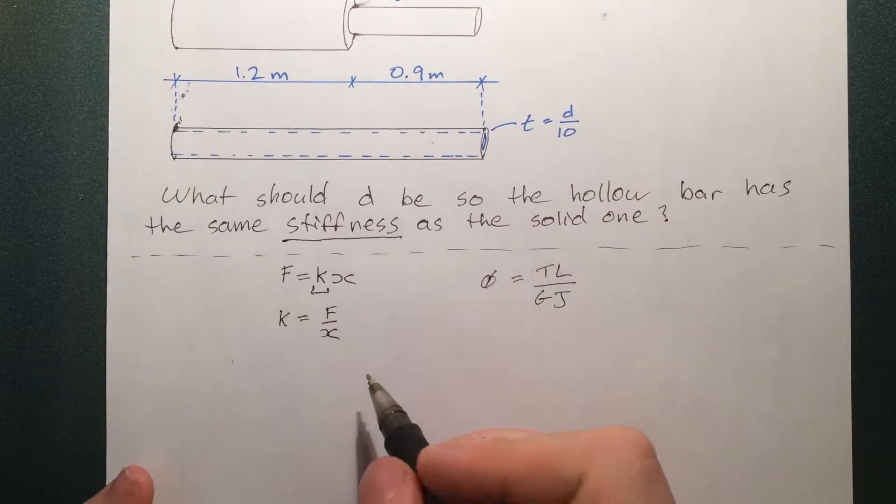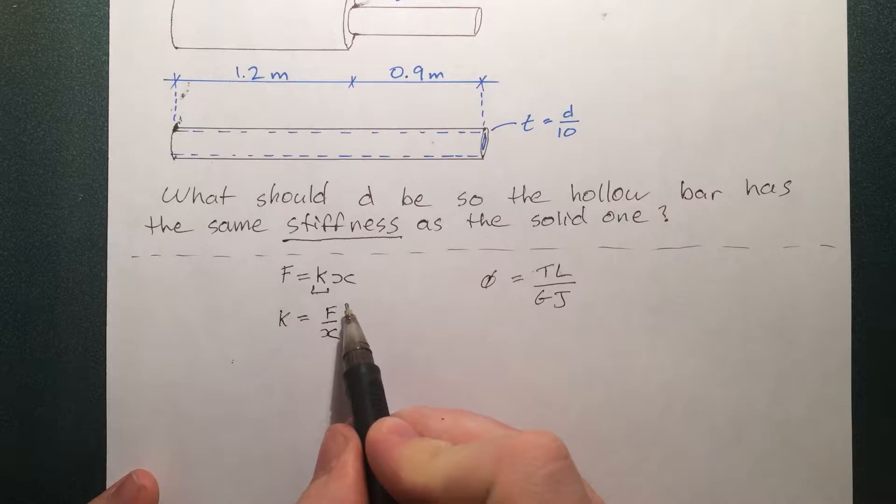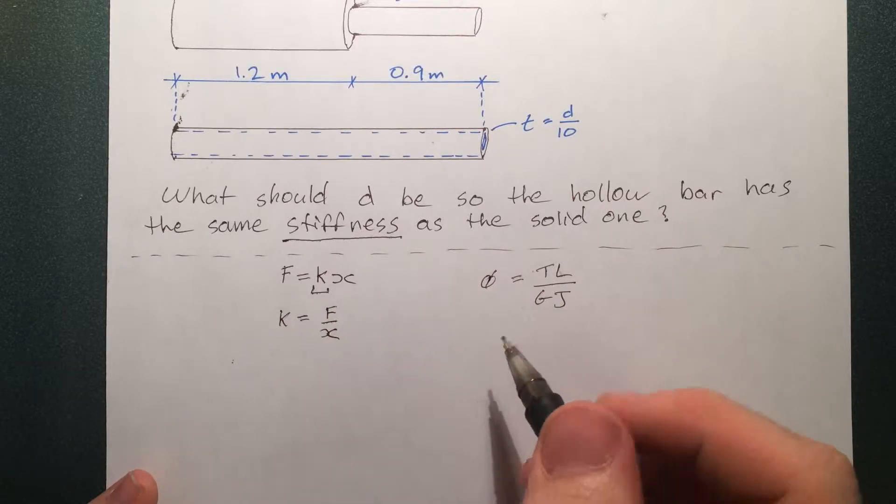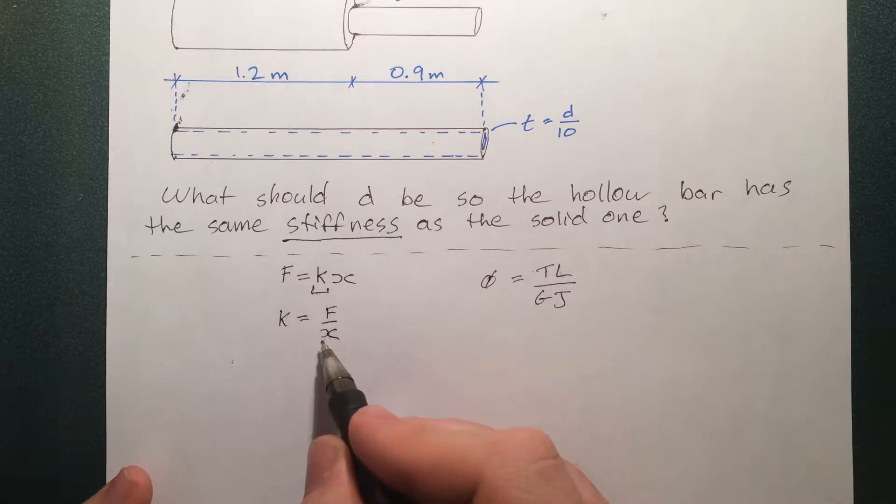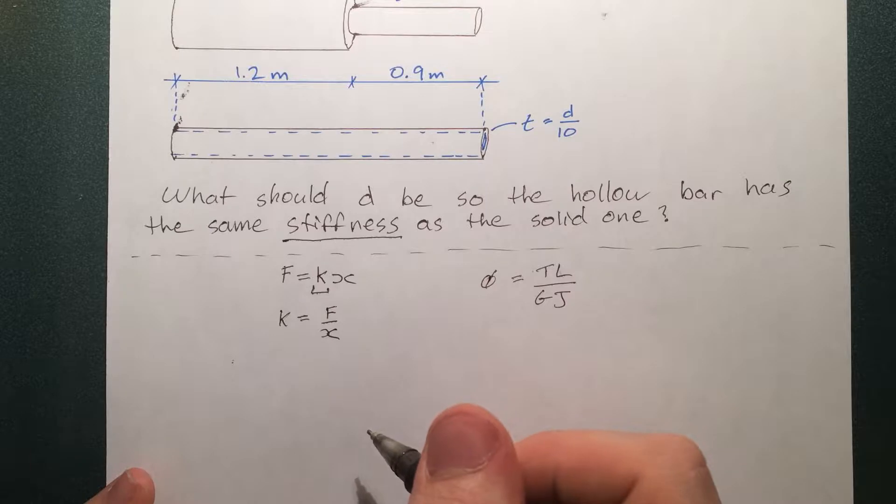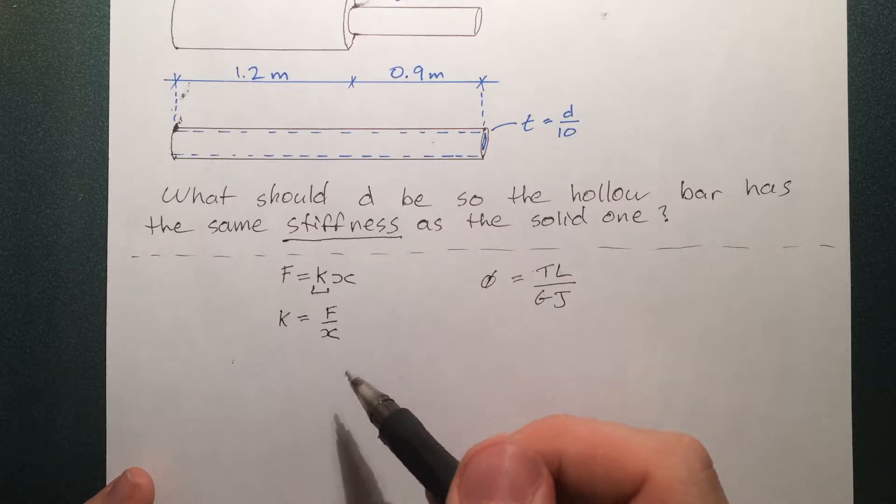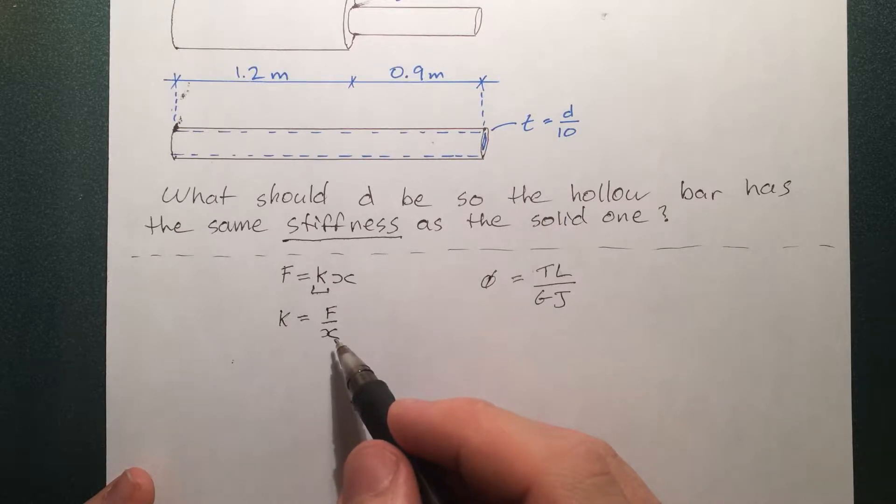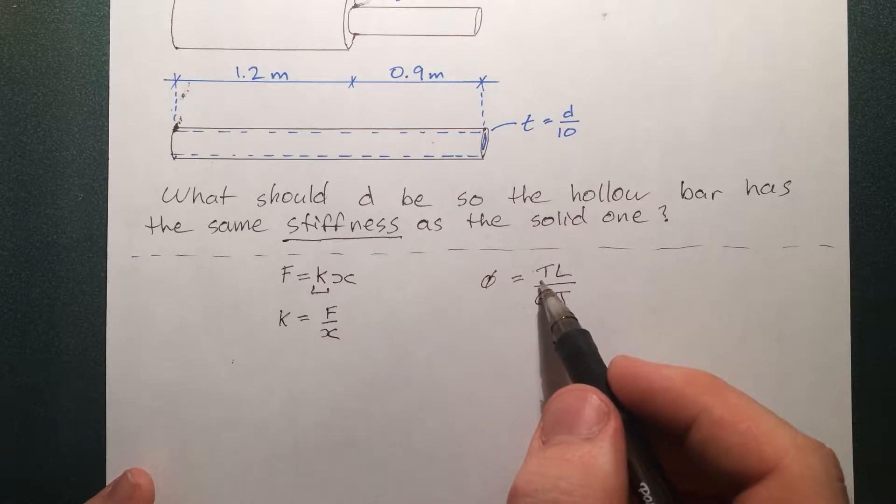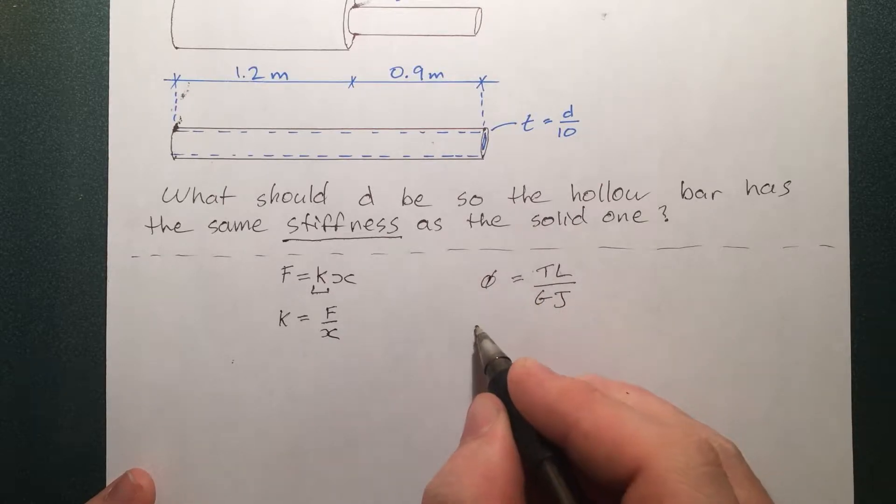So I've stated before, and I'll state again. Force in the axial bar world is the equivalent of torsion in the torsional bar world. And X in the axial world is the equivalent of twist, or phi, in the torsional bar world. So let's just rewrite this, F over X is equivalent to T over phi.